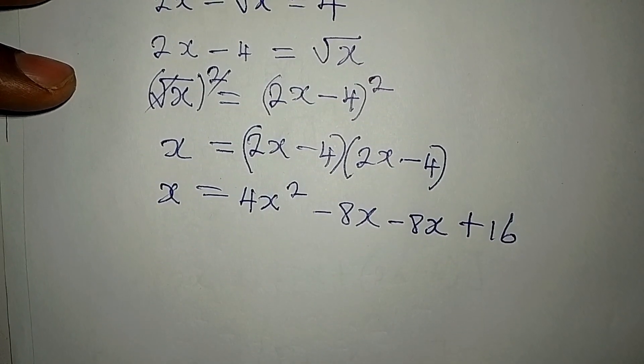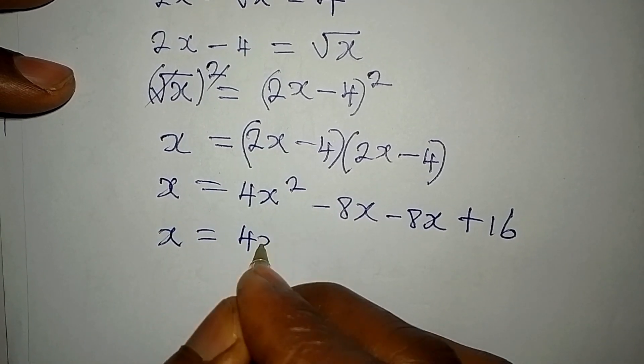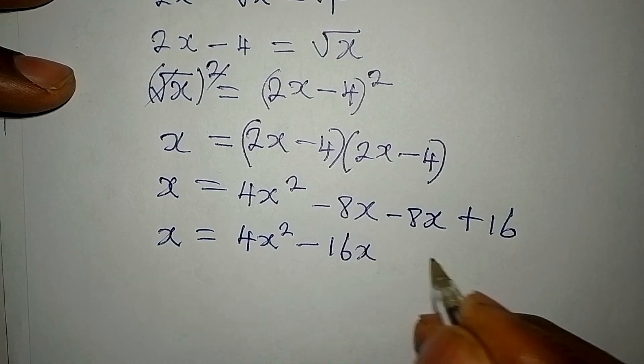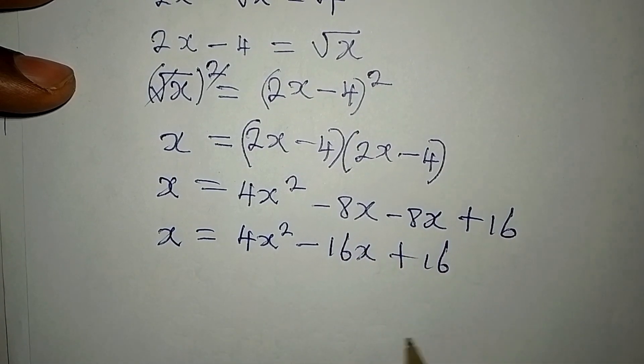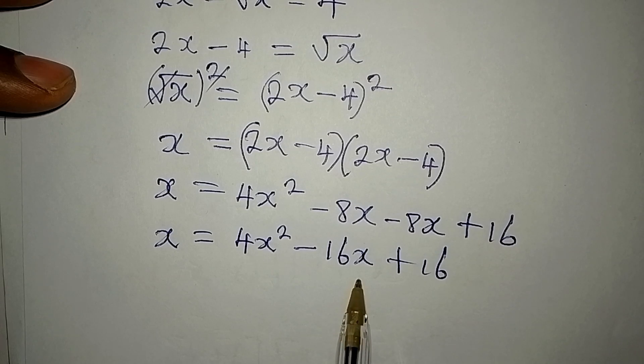Now, from here, we have x to be equal to 4x squared minus 16x plus 16. Minus 8x minus 8x is minus 16x.